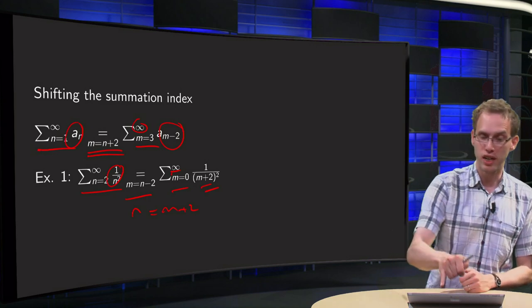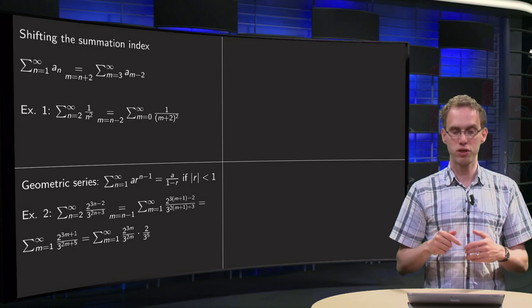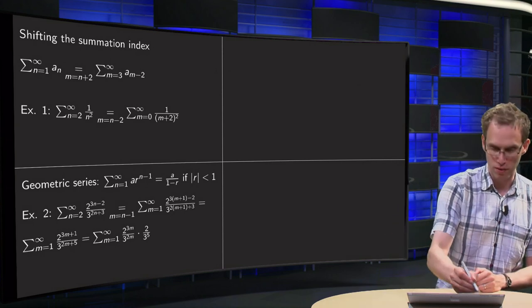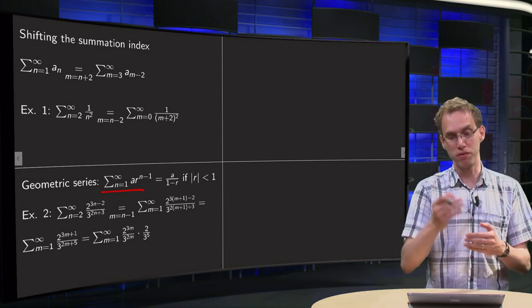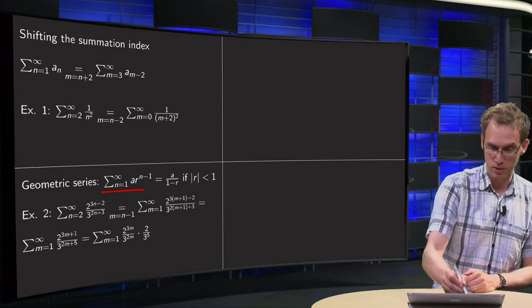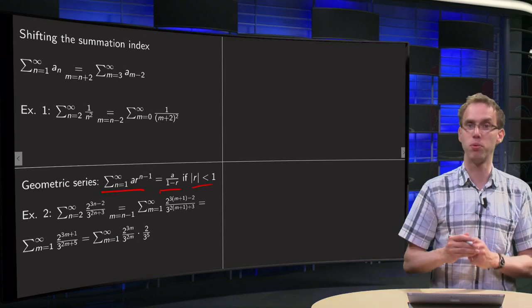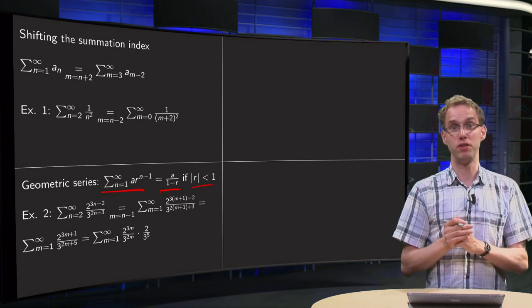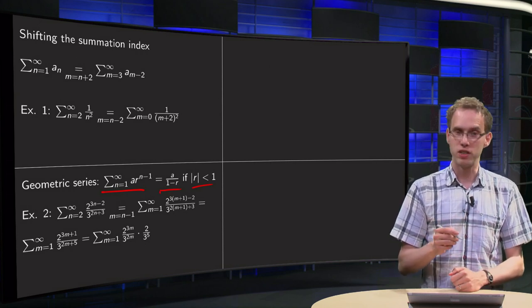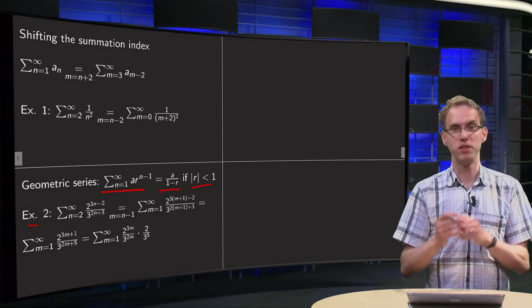You can always change the summation index to start at any point you like. For example, we know the geometric series written in standard form: summation starting from 1 up to infinity of a times r to the power n minus 1, which equals a divided by 1 minus r, if the norm of r is smaller than 1. So the standard formula of the geometric series starts at 1. What can we do in example 2, where we start at 2 of some geometric series?